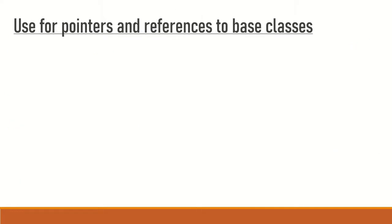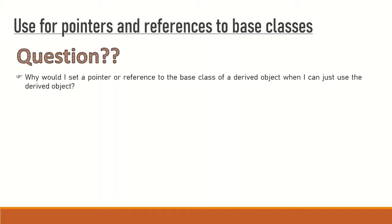The main question here is: why would I set a pointer or reference of the base class to a derived class object, when I can just use the derived object directly? For example, writing something like 'cat.speak()' method, and similarly if we have a dog class object, we can use 'dog.speak()' method — which looks very easy for us.